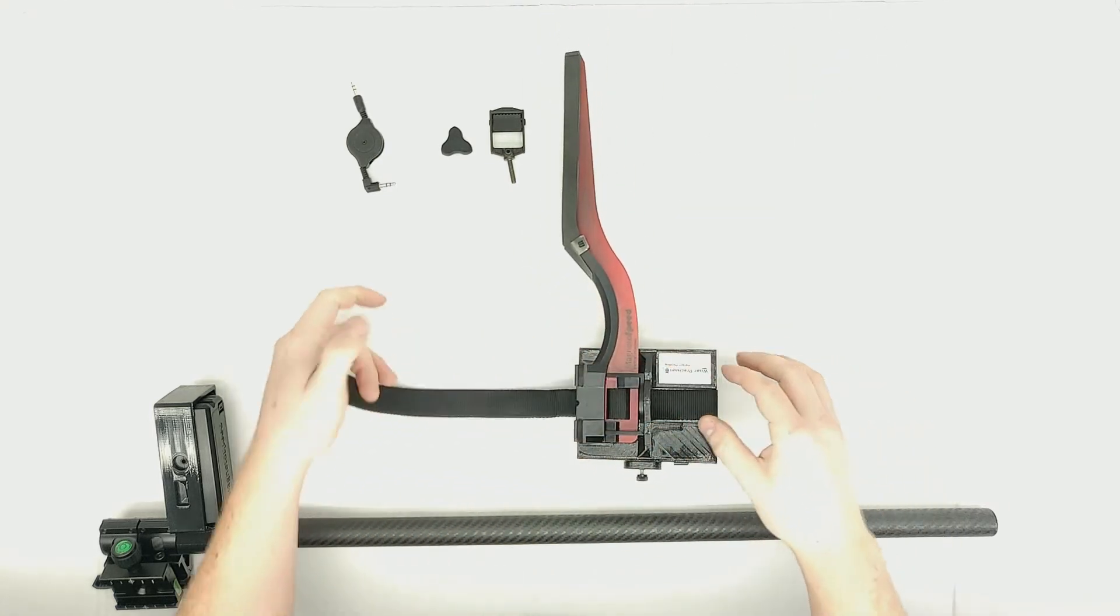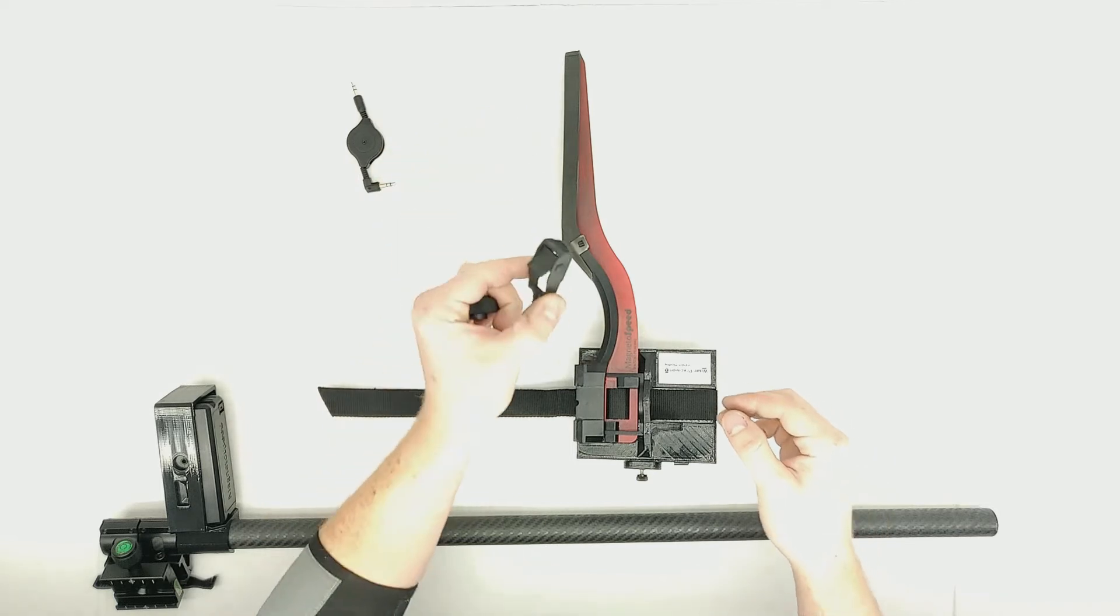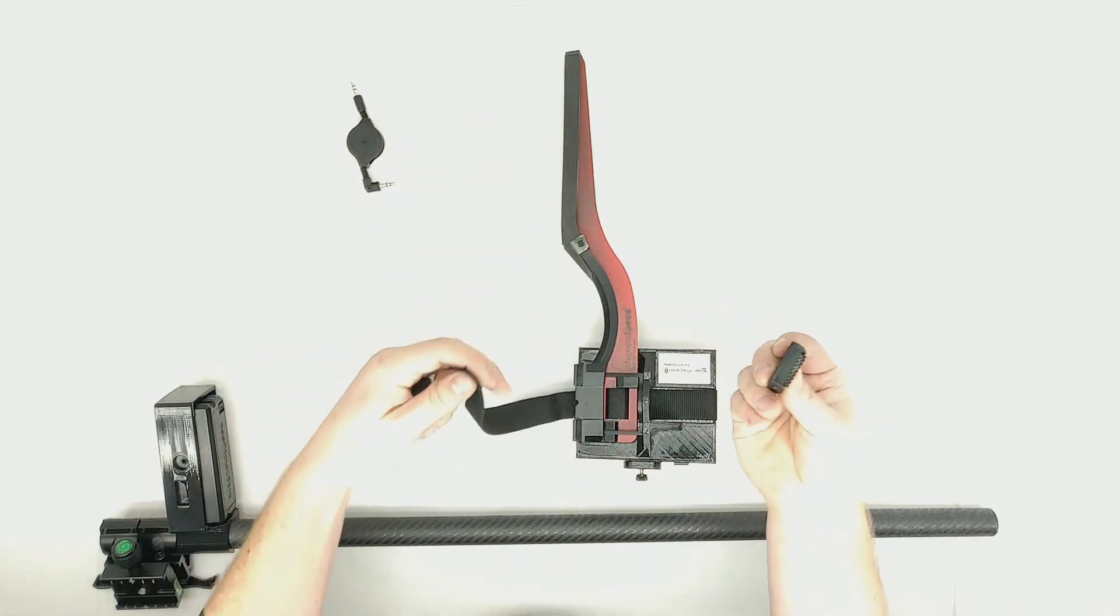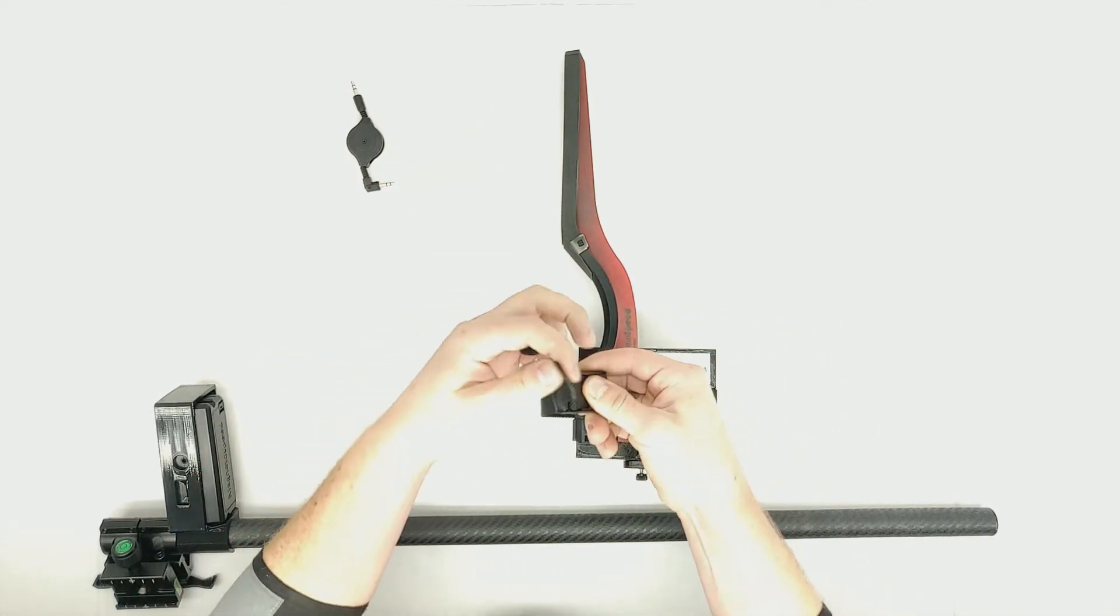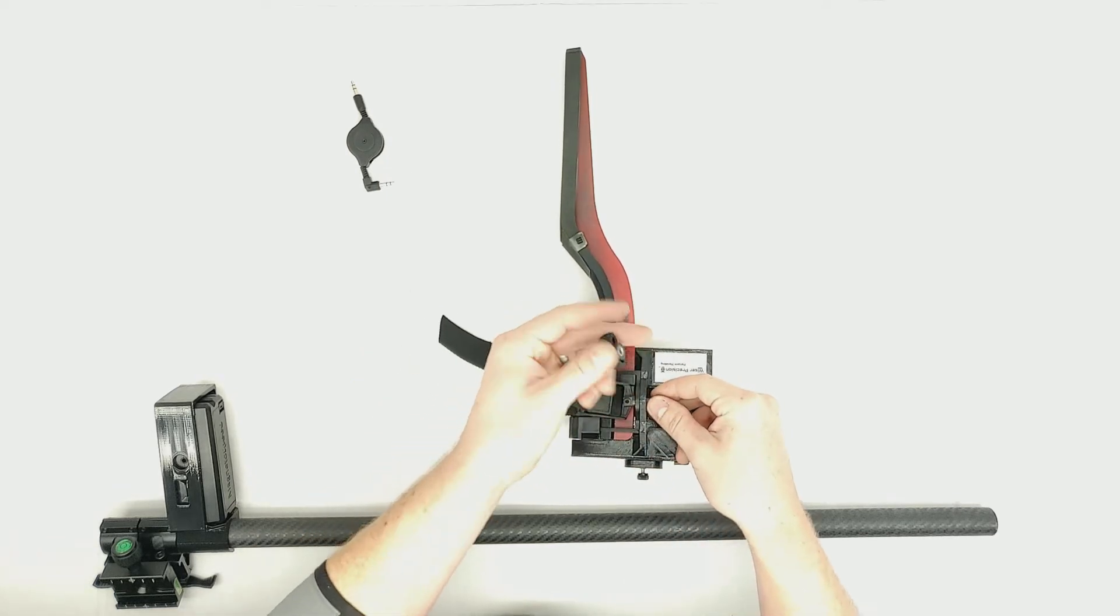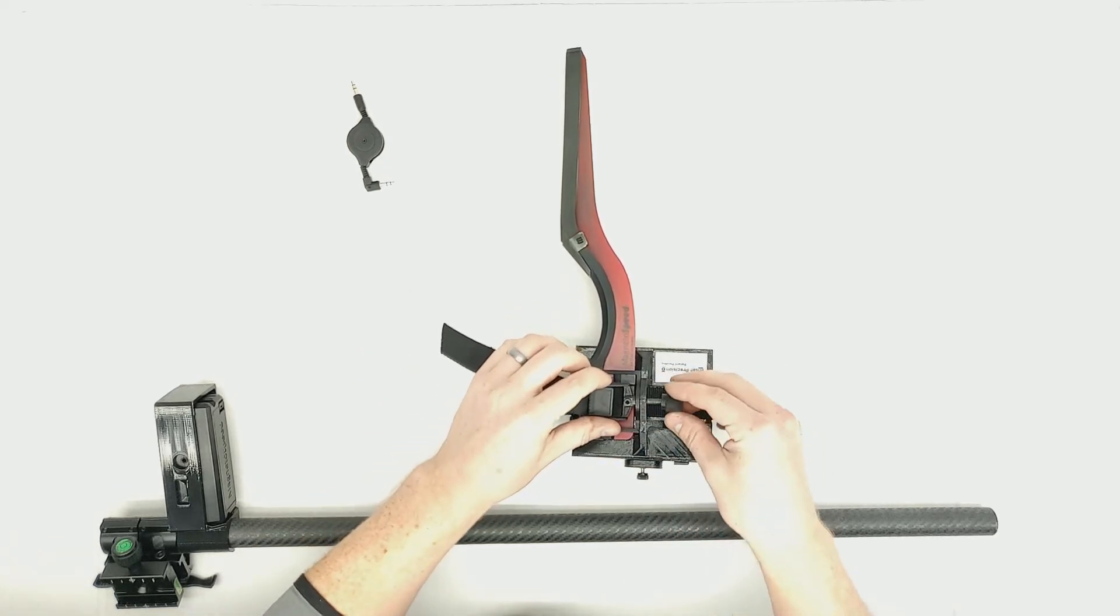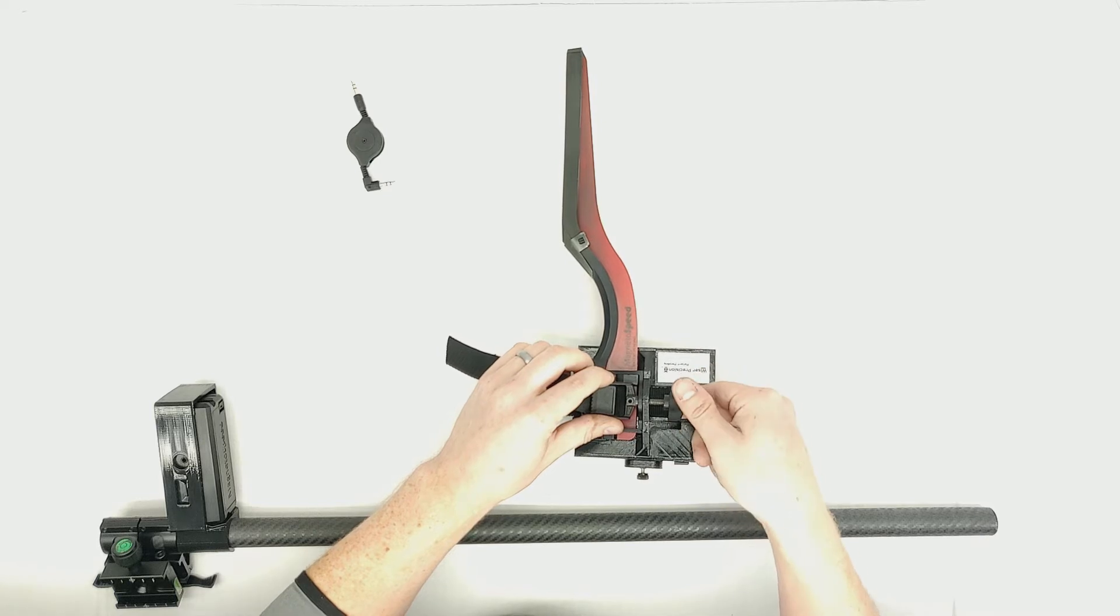Once here, you can flip the assembly over and grab your buckle nut and buckle and feed the strap through the buckle like you normally would to strap onto a barrel. Feed the screw from the buckle through the bayonet and the V3 bracket, loosely securing the nut a couple of turns.